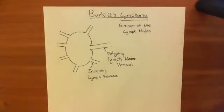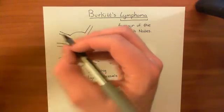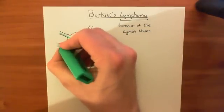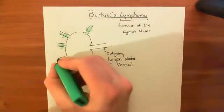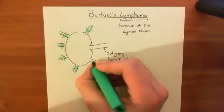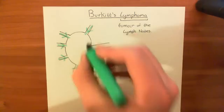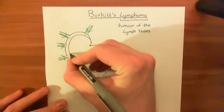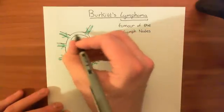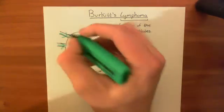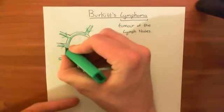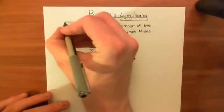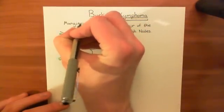The lymph comes in through these incoming lymph vessels — we'll draw it coming in in green, since lymph is generally represented as green. It goes into a peripheral sinus around the edge of the lymph node. This sinus is a space around the edge of the lymph node in which the lymph can collect. It's called specifically the marginal sinus.